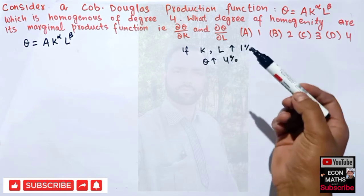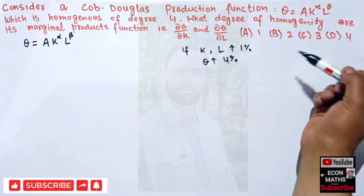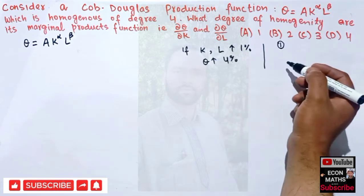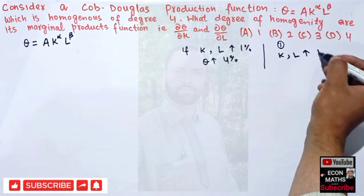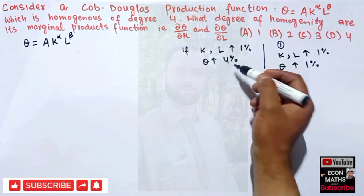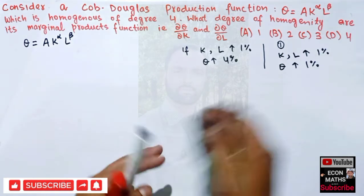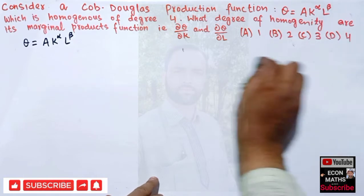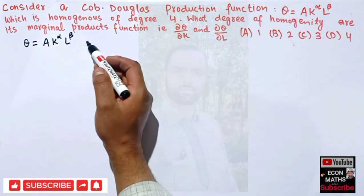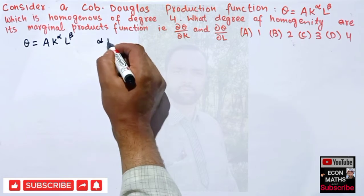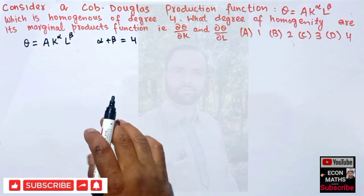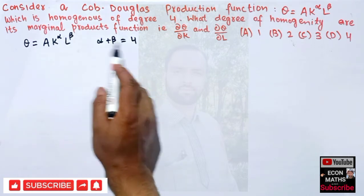For comparison, if a Cobb-Douglas production function were homogeneous of degree 1, it would simply mean that if capital and labor are increased by 1 percent, quantity produced would also increase by only 1 percent. This is the meaning of the degree of homogeneity. Since our function is homogeneous of degree 4, this simply means alpha plus beta equals 4.